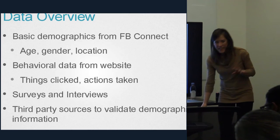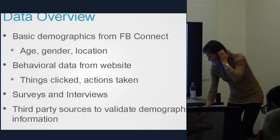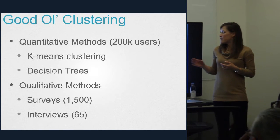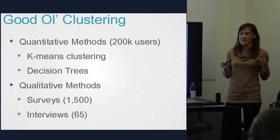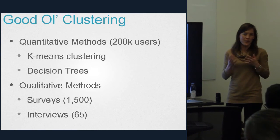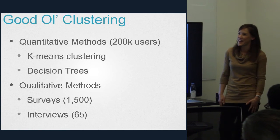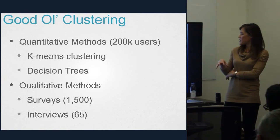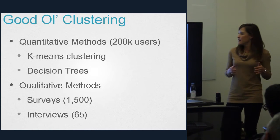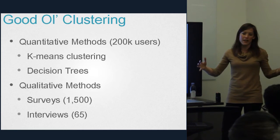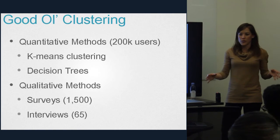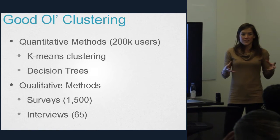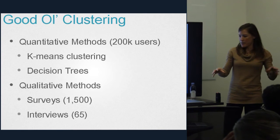So first we started with the quantitative side. We took a random sample of 200,000 users — our entire user base was around 182 million. We took 200,000 users who had been active in the last six months, took a random sample of that, and we dumped all of the data from RapLeaf, Facebook, and our own website and put it through a k-means clustering analysis. That was because we needed to figure out how many clusters there were and generally figure out who went into what cluster.